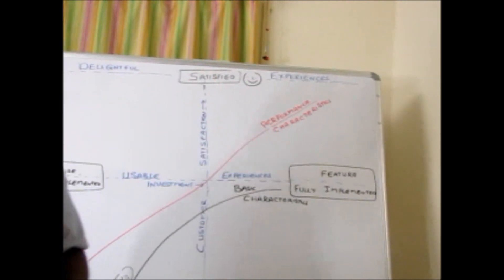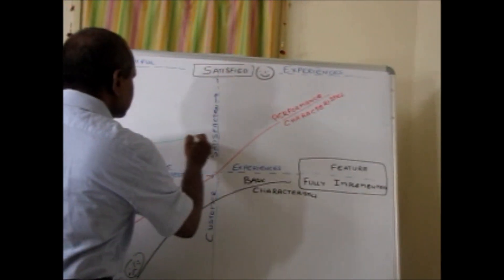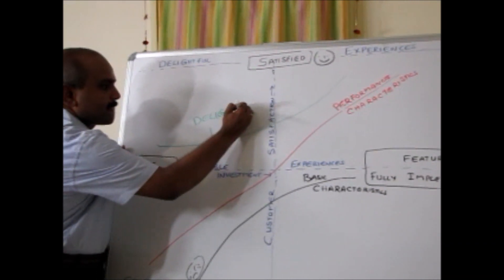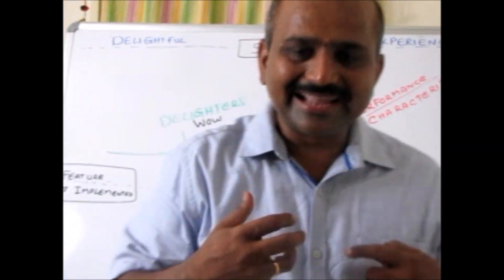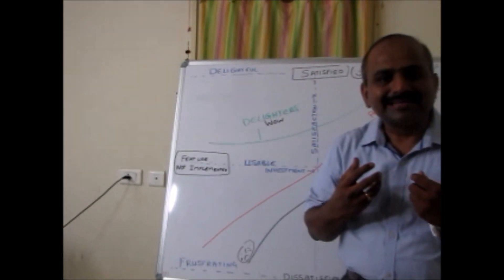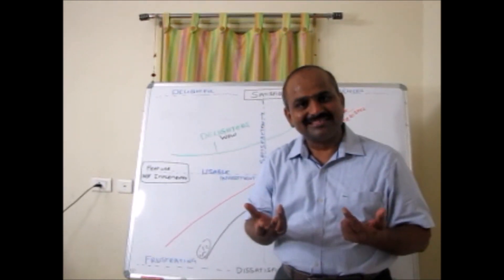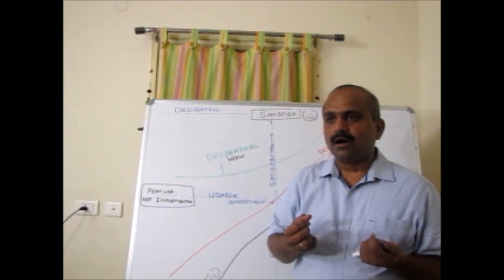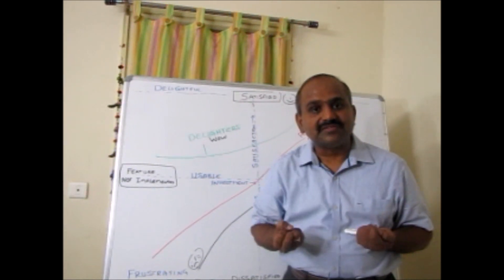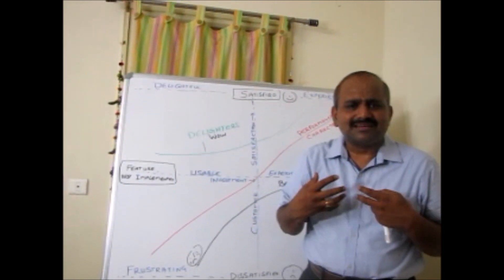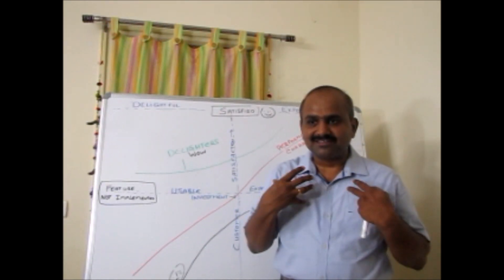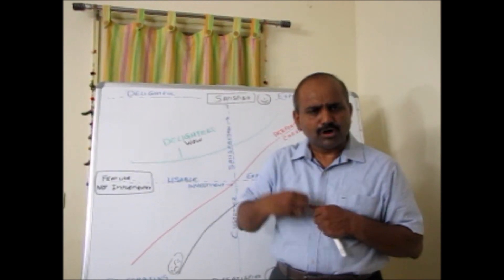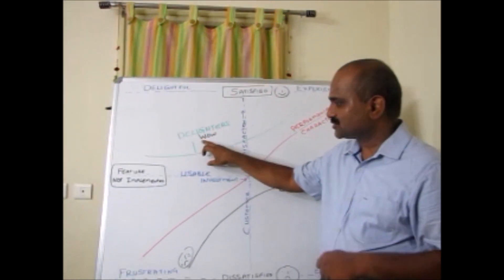The third thing that comes is the delighters. These are the wow characteristics, delighters. Example: the moment I get into the car, the car driver tells me Wi-Fi is enabled within the car. Wow, I get really good feeling. A newspaper is available to me. In summer, cold water is available for me. Those are the things that make me feel very happy that the product is taking care of me. I really feel very wow about those features and I want to be with this product because of those features. Those are called delighters, wow characteristics.